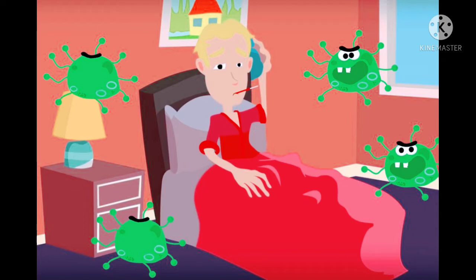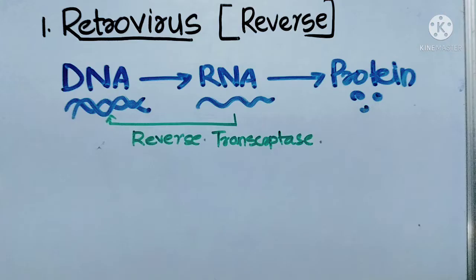The main causative agent of HIV is a retrovirus. Retrovirus leads to HIV. 'Retro' means reverse. The central dogma states that DNA makes RNA, and RNA makes protein.